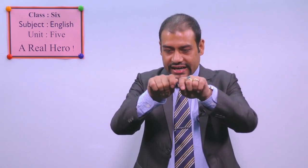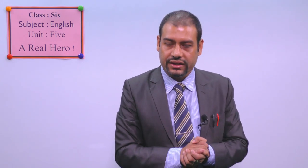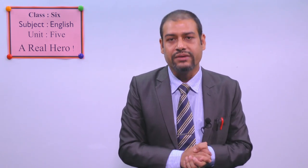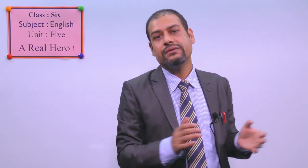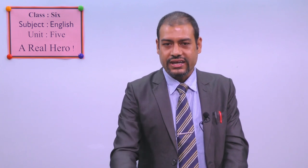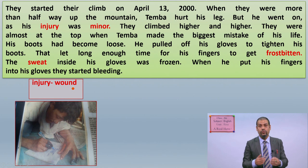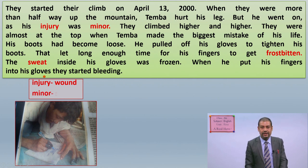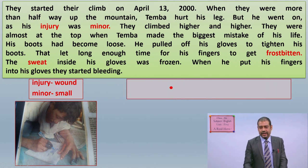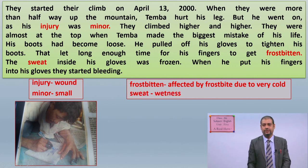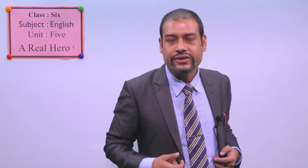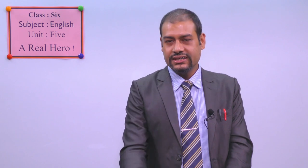If he had not tried to tighten his boots at that moment, he would not have gotten this problem. That is why it is said to be the biggest mistake of his life. Now the meanings: injury means wound; minor means small — at first he thought the wound was very small. Frostbitten means affected by extreme cold, which damages the body part. Sweat means the wetness or liquid our body produces.